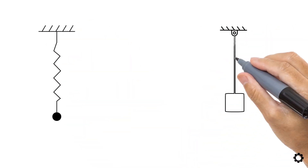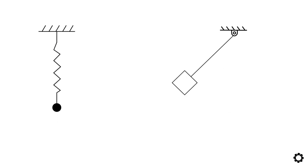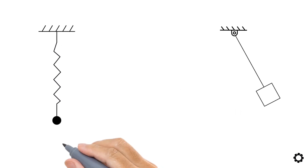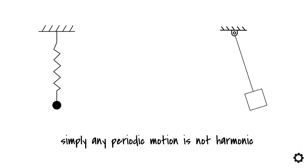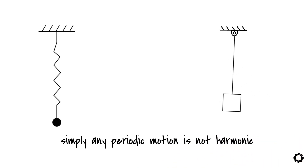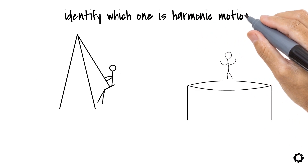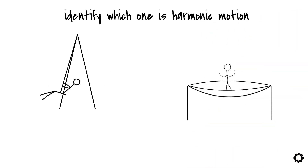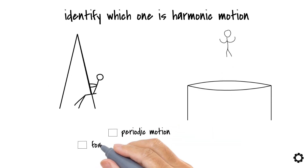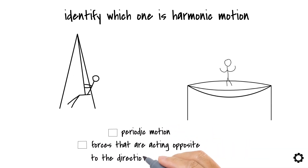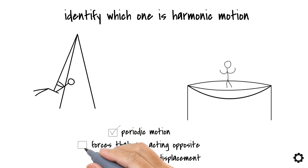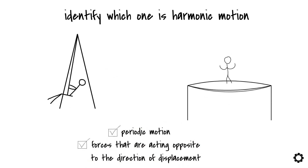Besides the mass-spring system, there are numerous examples of harmonic motion that we see in daily life. However, always remember that simply any periodic motion is not harmonic. Let's take a small test: if we have one child playing on a swing and another child jumping on a trampoline, can you identify which one is harmonic motion? Both cases involve periodic motion and forces acting opposite to the direction of displacement — do they both qualify as harmonic motion?